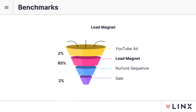On the lead magnet funnel side, you want your ads to get a click-through rate of at least 2%. The reason it's higher is because you're offering something free, so more people should be clicking. Of the people that click off the ad, you want at least 65% to actually receive your lead magnet. And of the people that receive your lead magnet, you want at least 2% of all those people converting into paying customers.